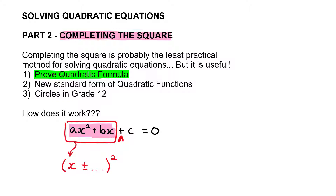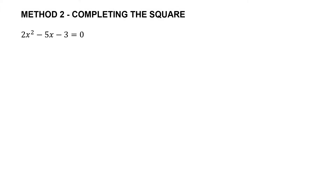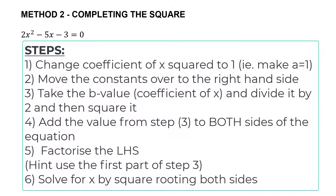As we go through the next few examples, make sure you take note of the steps we're going to use. If you can learn those steps off by heart, then this method, even though it's long, is actually going to be really easy to work with. The question we have is to solve for x in the equation 2x² − 5x − 3 = 0 by completing the square. There are six steps to note — follow along as we apply them.